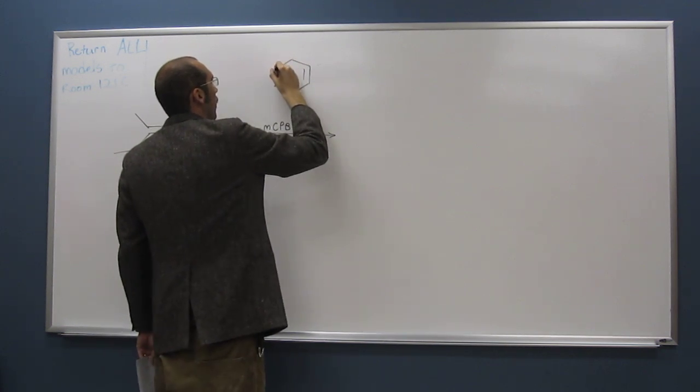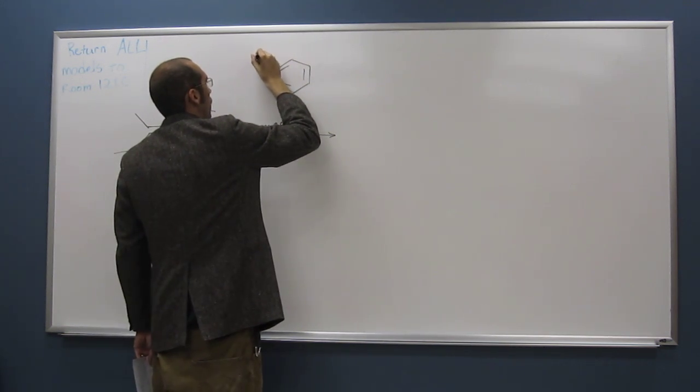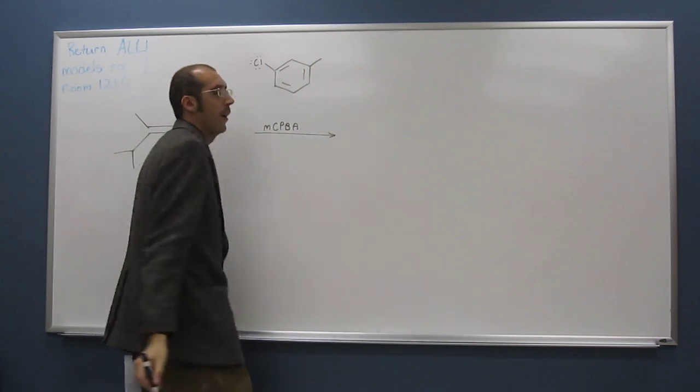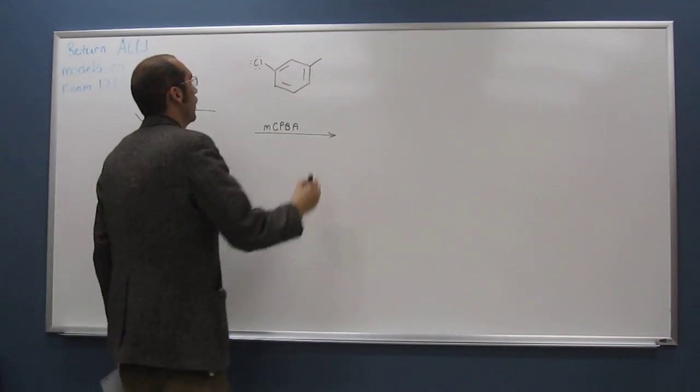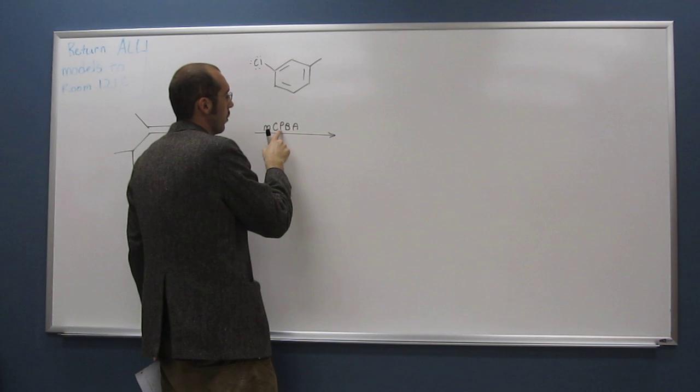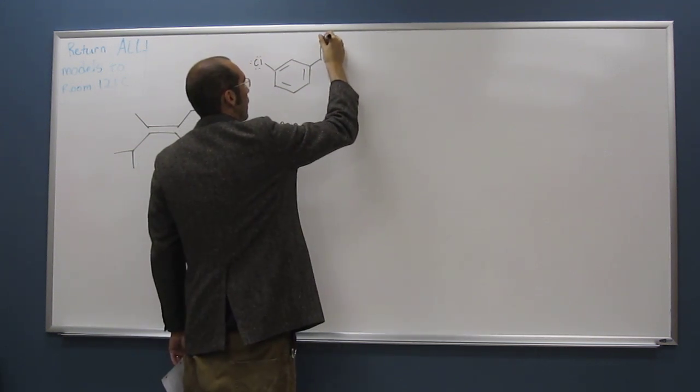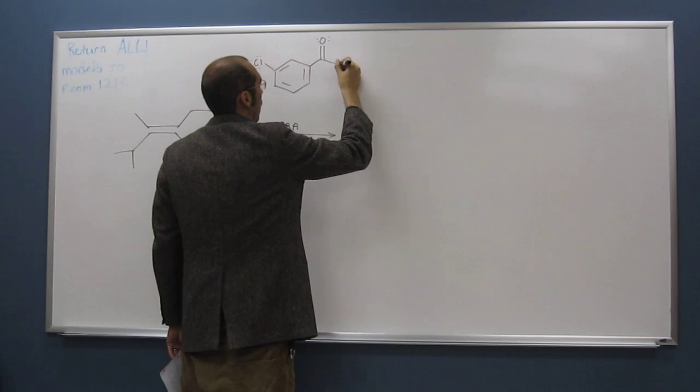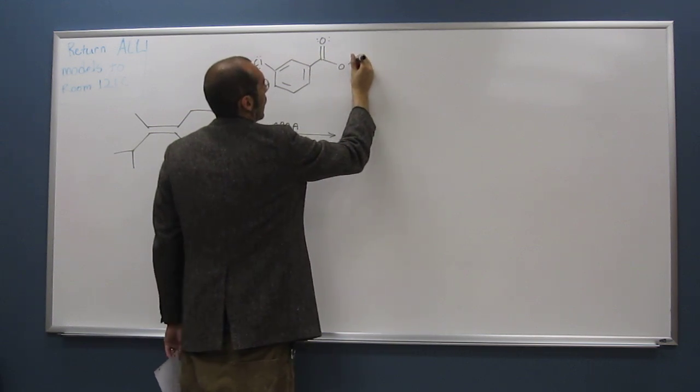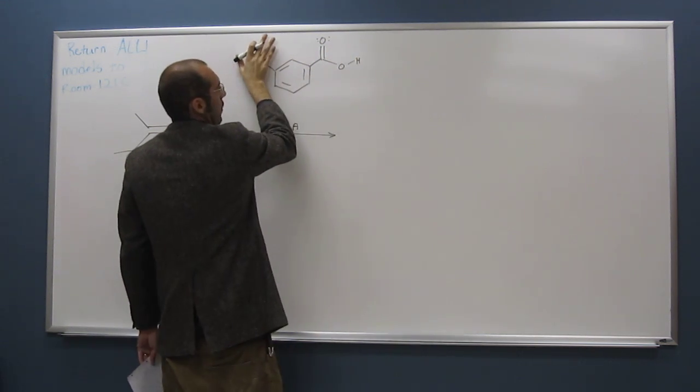Okay, so metachloro, so that would be metachloro, right? So metachloro, peroxybenzoic acid. So the benzoic acid is, benzoic acid would be that structure there.